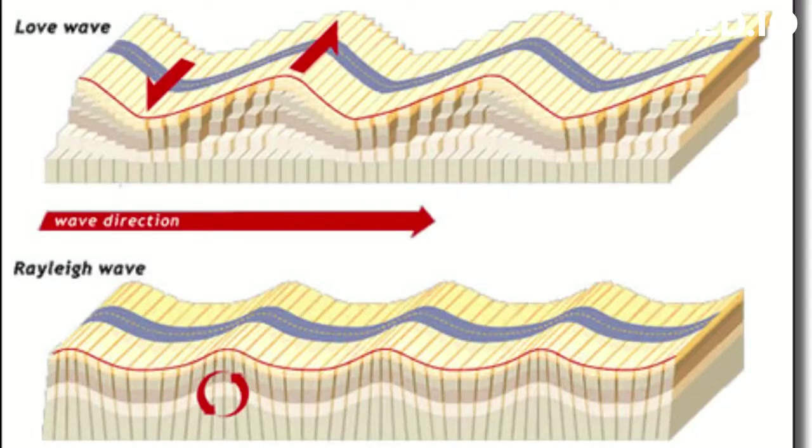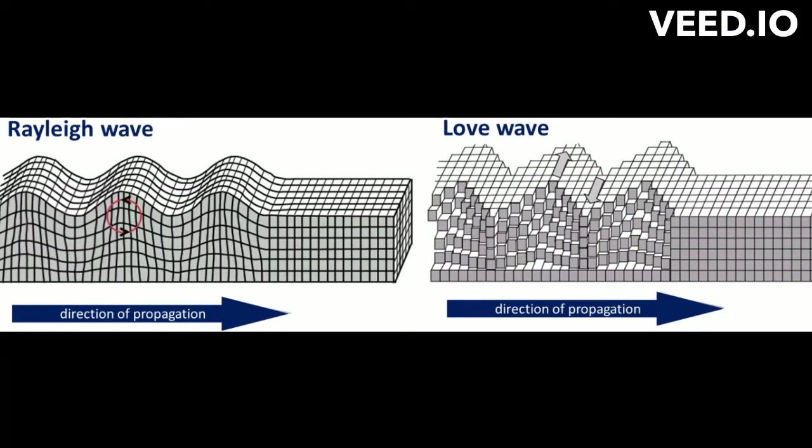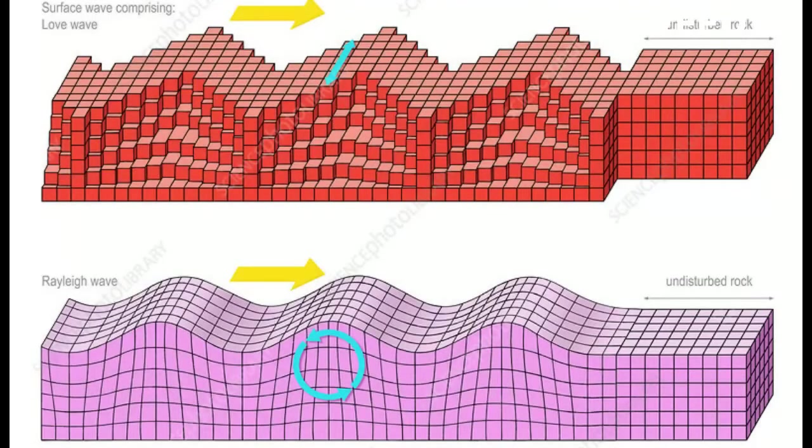Surface waves propagate along the boundary of the solid material on the Earth. These waves behave like secondary waves in that they cause up and down and side to side movement as they pass, but they travel slower than secondary waves and do not travel through the body of the Earth. These waves are of two types: Love waves and Rayleigh waves.